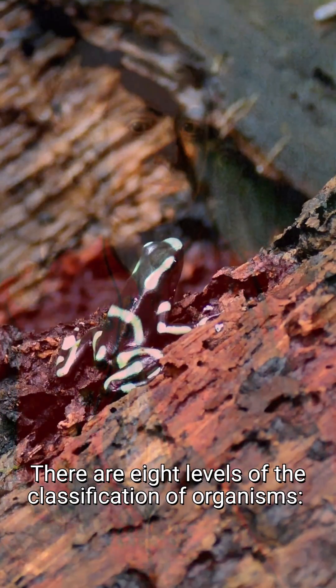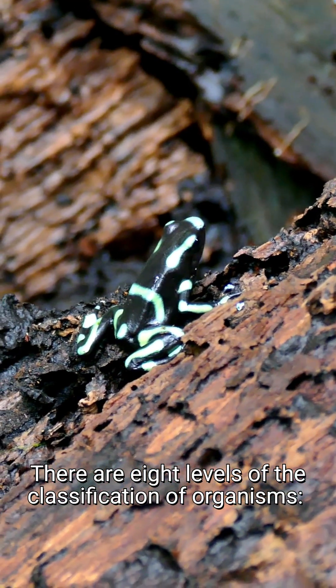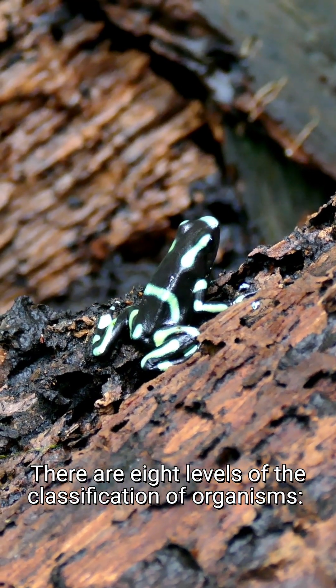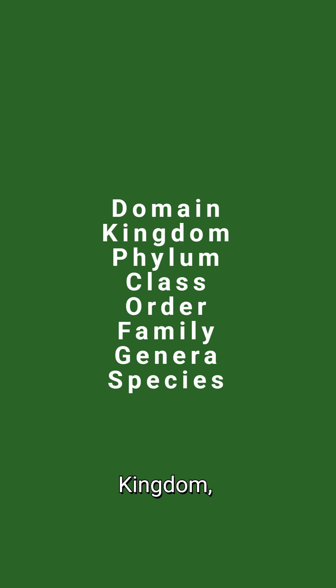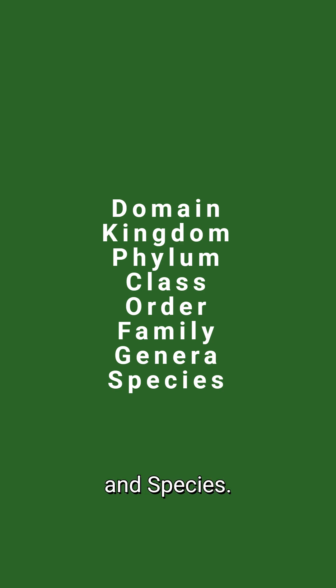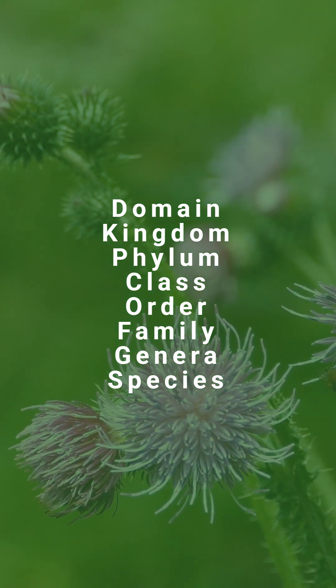There are eight levels of the classification of organisms: Domain, Kingdom, Phylum, Class, Order, Family, Genus and Species.